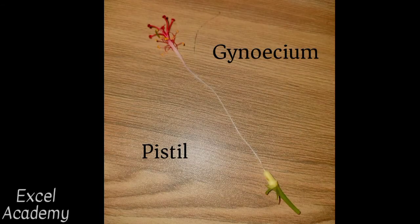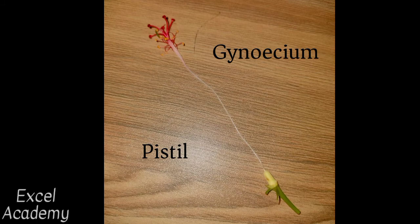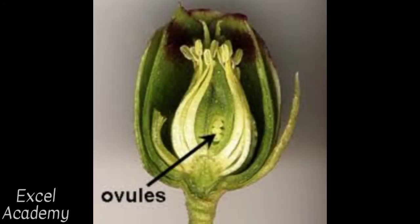The gynoecium, or the female part of the flower, is also known as pistil. Inside the ovary, the flower's eggs, also known as ovules, are located, which after fertilization grow into a seed in a fruit plant.